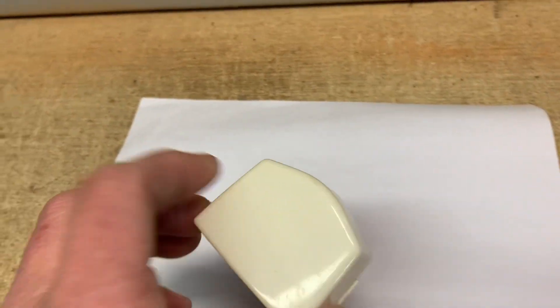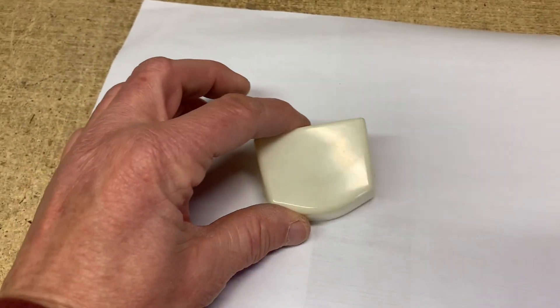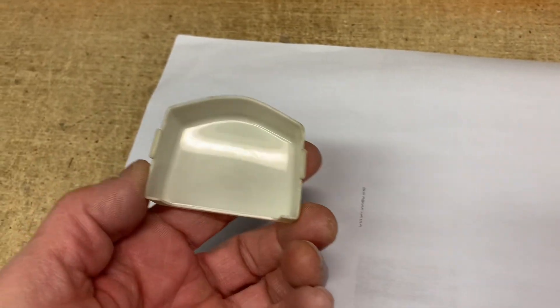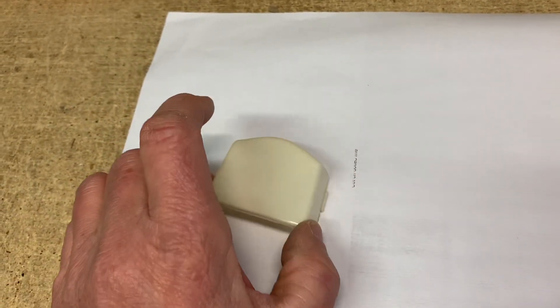This is a dome light cover for a 74 to 78 Mustang II. I just kind of uncovered this from a bunch of parts that I have laying around, and I was able to get $20 for it.